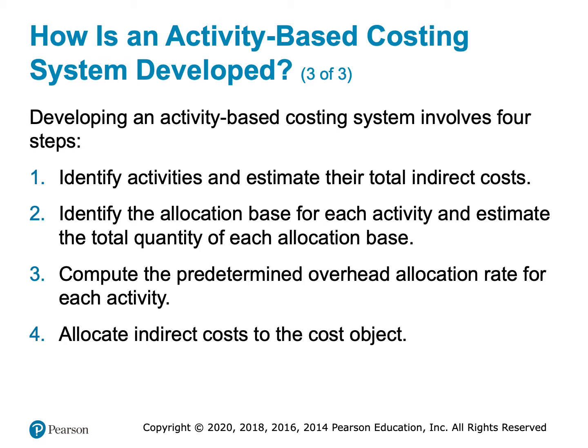Maybe it's units produced, maybe it's number of parts, maybe it's number of purchase orders, maybe it's number of batches that we run, maybe it's square footage — it could be anything. So we're going to determine an activity base for each activity and then estimate the amount of each allocation base. Then we'll compute a predetermined overhead rate for each activity. Just like we've done before, instead of having one rate for all of our overhead, we're going to have a separate rate per activity.